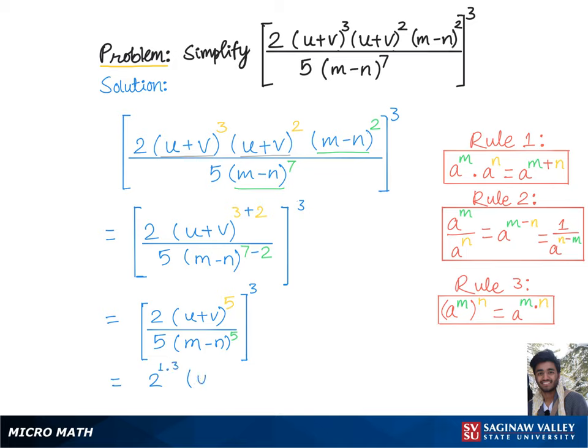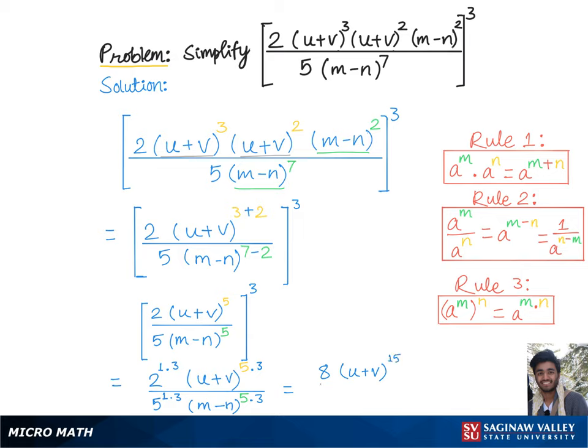Divided by 5 to the 1 times 3, multiplied by m minus n raised to the 5 times 3, which is equal to 2 cubed would be 8 times u plus v to the 15th divided by 5 cubed is 125 times m minus n raised to the 15th, which is the final answer.